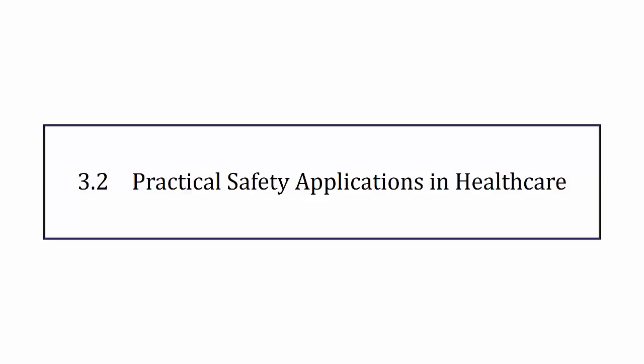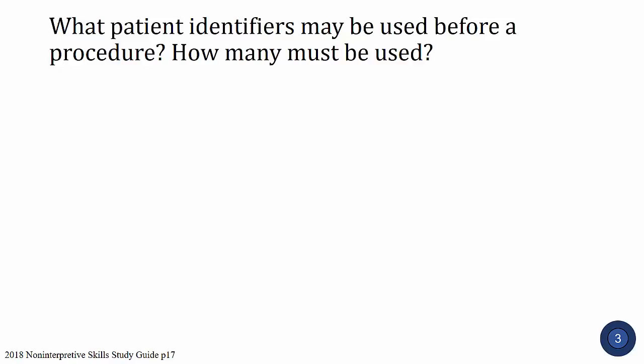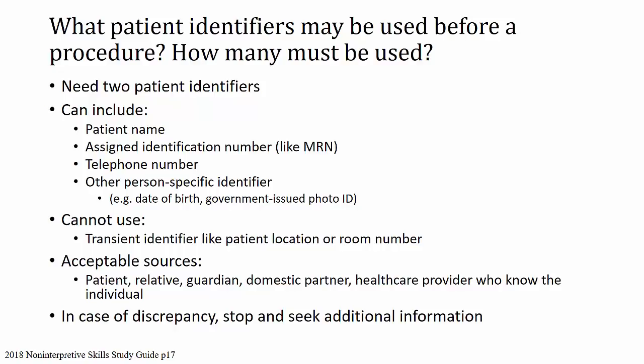First question: what patient identifiers may be used before a procedure, and how many must be used? Before we do a procedure, we need to use at least two patient identifiers. This can include patient name, an assigned identification number like a medical record number, a telephone number or something specific to the patient, a person-specific identifier like date of birth, or a government-issued photo ID or number like a driver's license. We cannot use a transient identifier like a patient location or room number — it has to be something permanently associated with that patient.